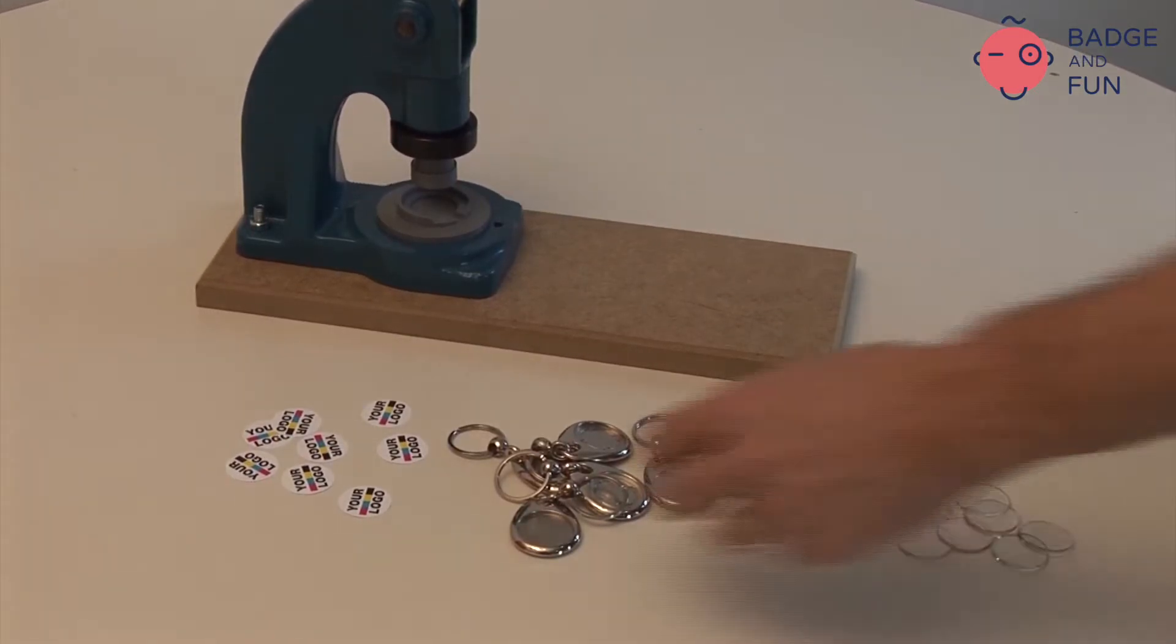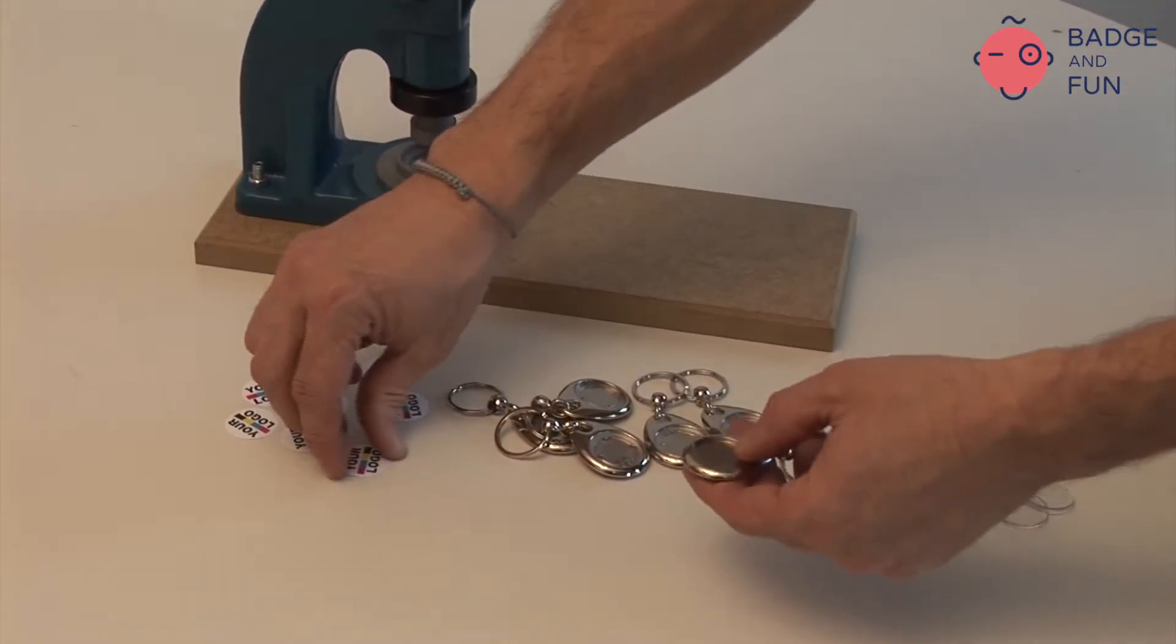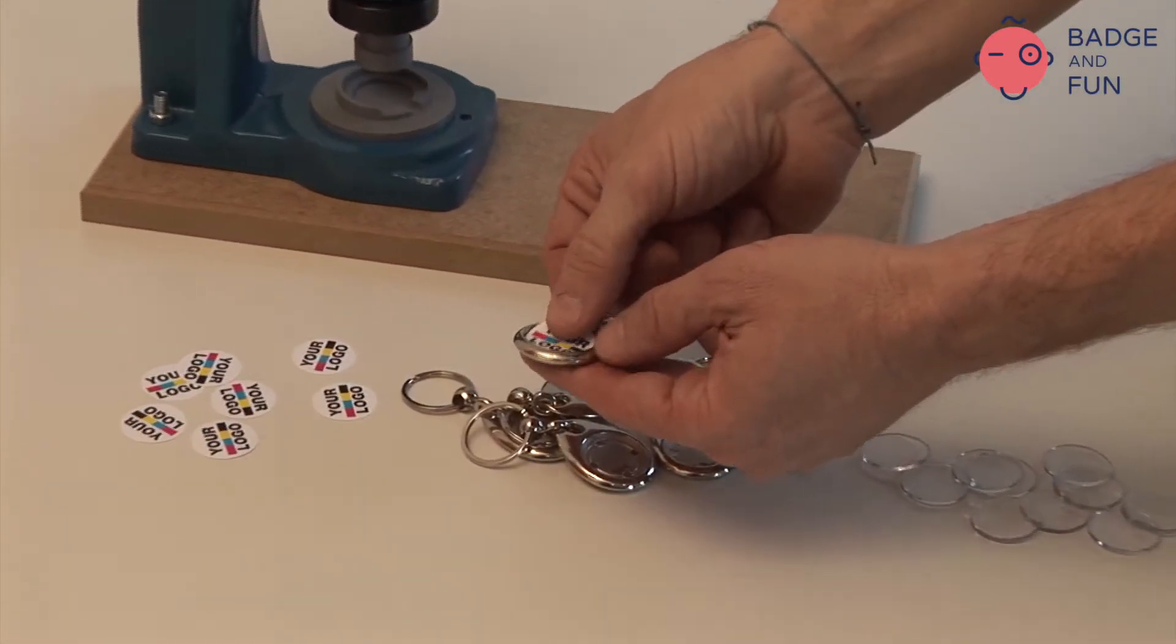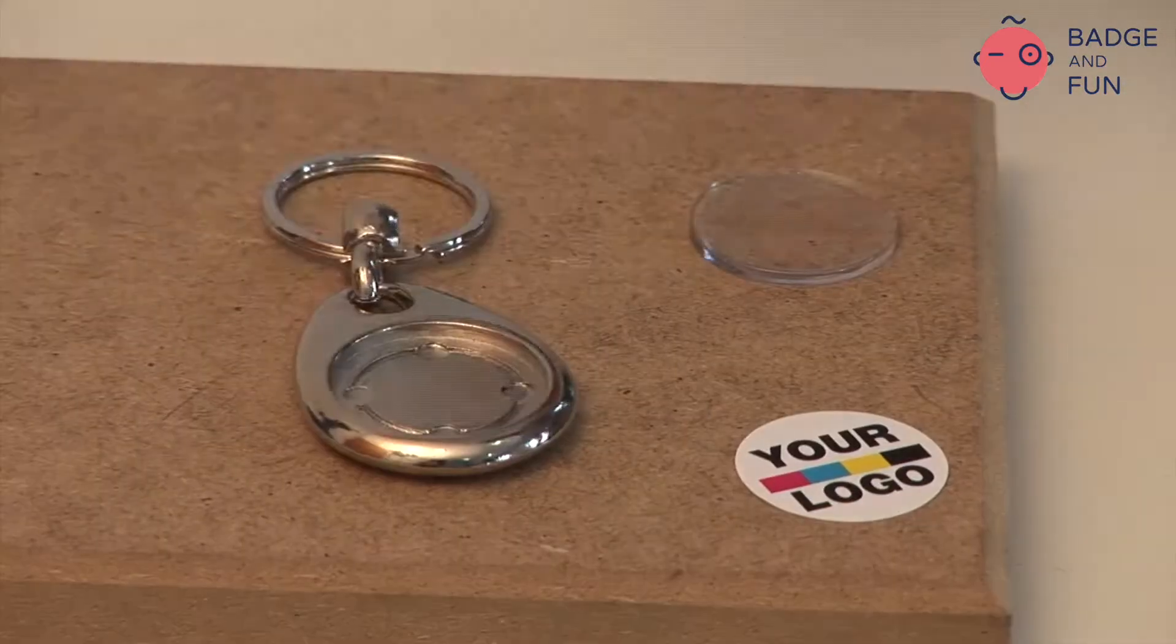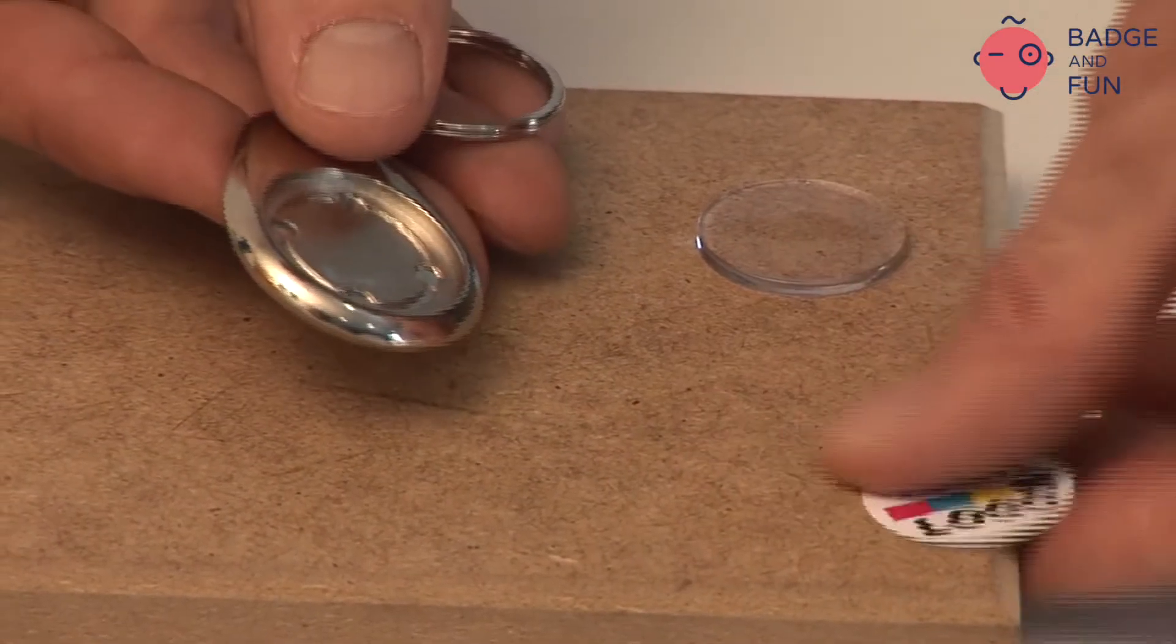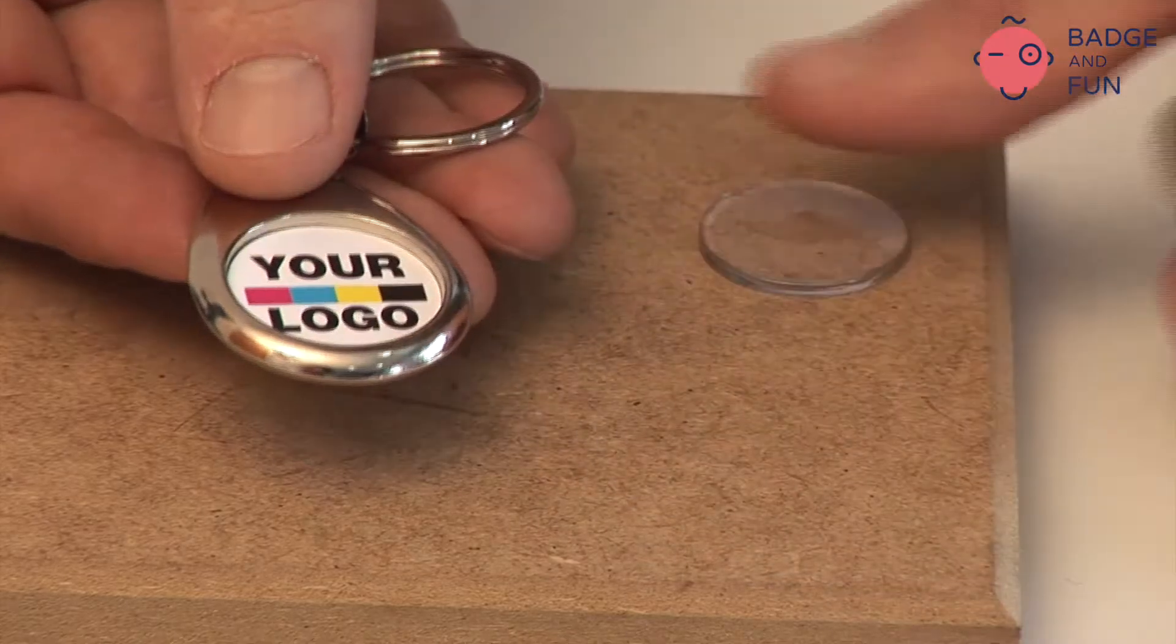Once the papers are cut, we are ready to place them on the metallic keyrings with the help of the assembling moulds. The assembling moulds, UM, are used in the process of manufacturing metal keyrings.